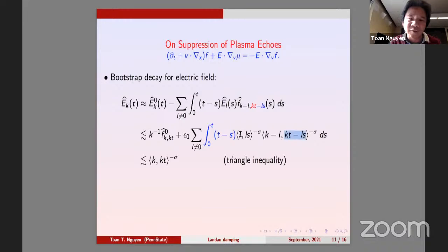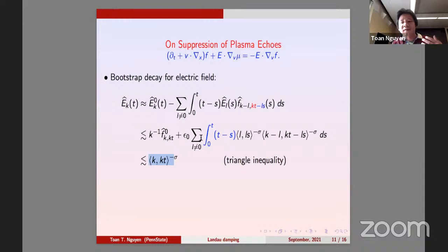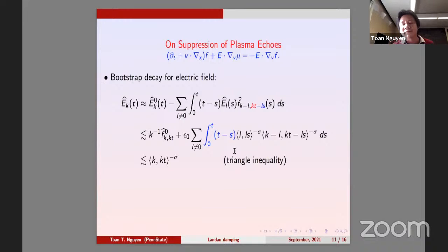Using triangle inequalities, these two terms are bounded appropriately — this is the bootstrap argument. You put in that the electric field decays by that amount and get back the same decay for the electric field. The key is to control the integral from zero to t of (t minus s) to some power — if not careful this integral is over t squared, and you can only propagate up to time of order epsilon to the minus one half.